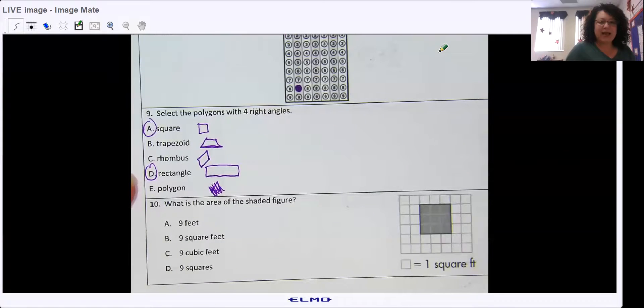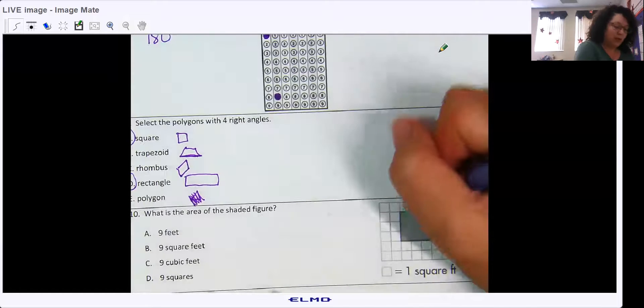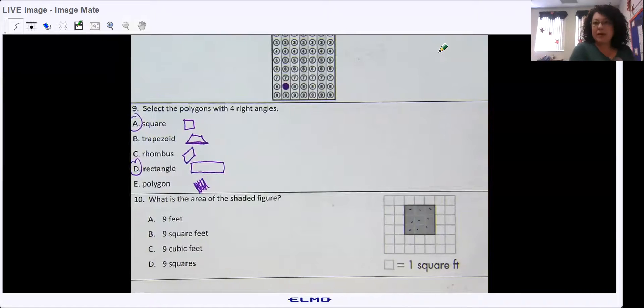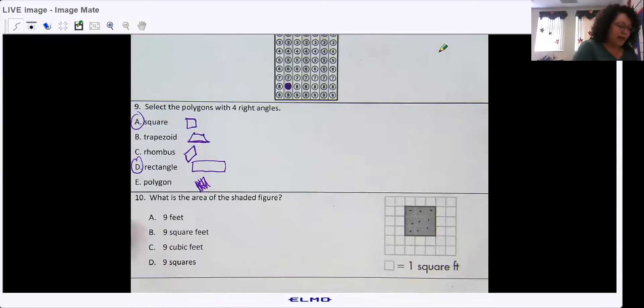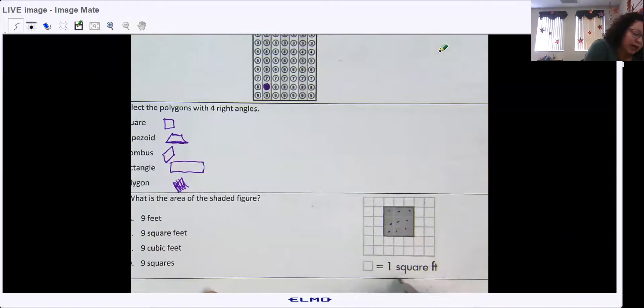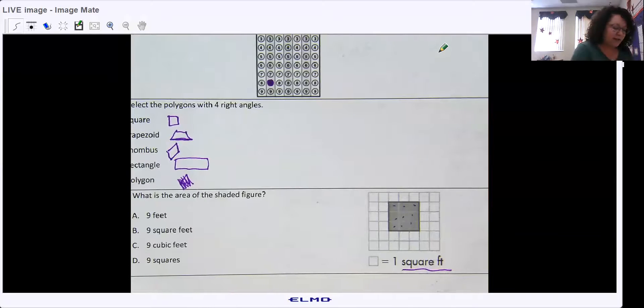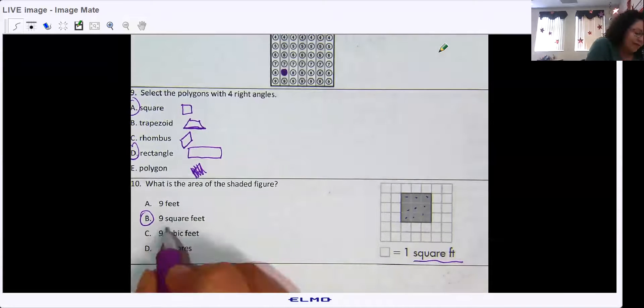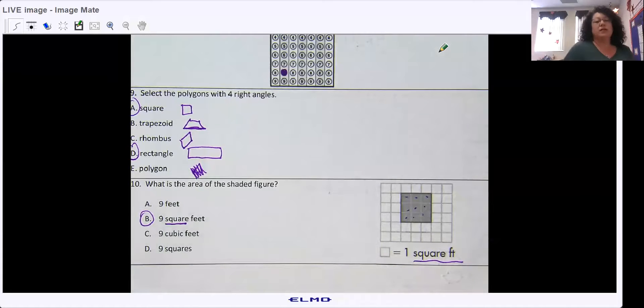Number 10, what is the area of the shaded figure? One, two, three, four, five, six, seven, eight, nine. Remember, I always dot to make sure I count them all. One square is one square foot. So B would be correct. Remember with area, you're always going to have that square feet, square inches, square miles.